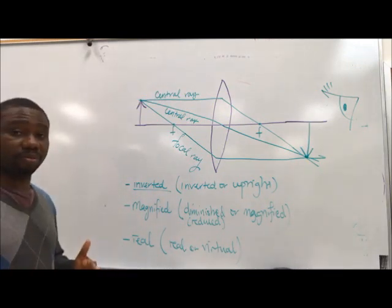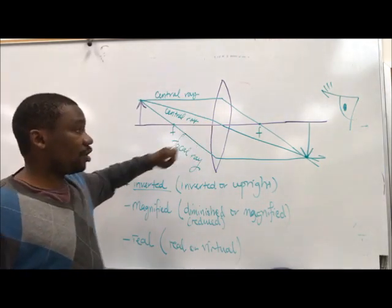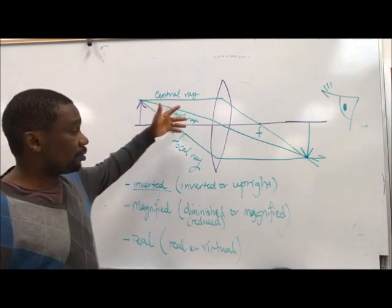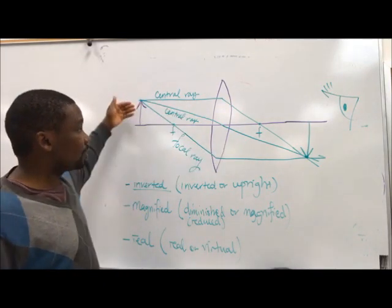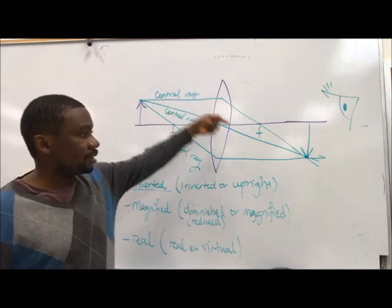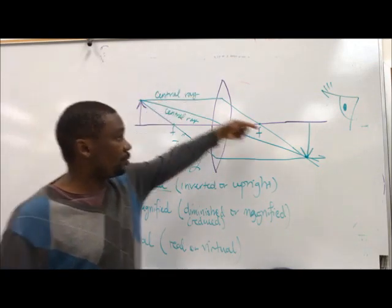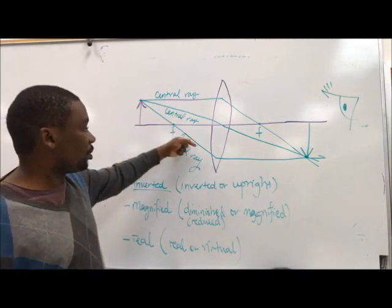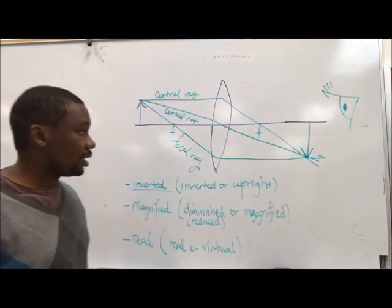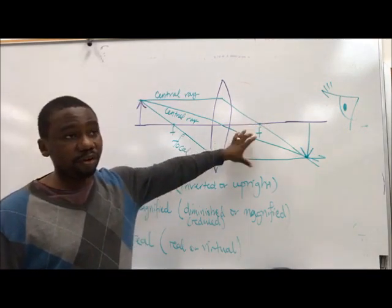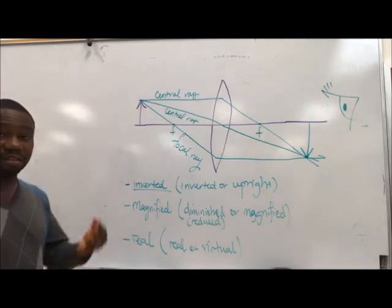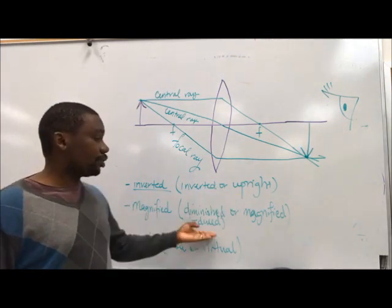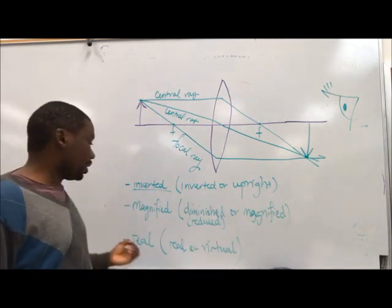Keep in mind there are three types of rays involved in the formation of an image: the ray can be parallel, the ray can go to the center of curvature, or the ray can go to the focal point. Depending on which it does, that determines what happens to the ray when it exits the lens. An image is described by three properties: it can be inverted or upright, it can be reduced or magnified, and it can be real or virtual.